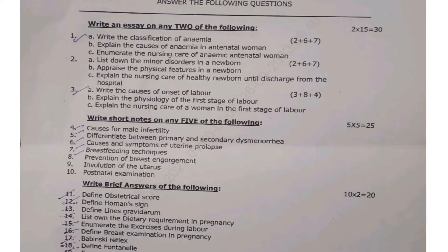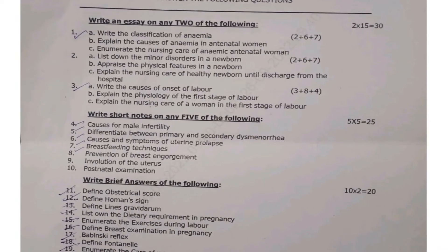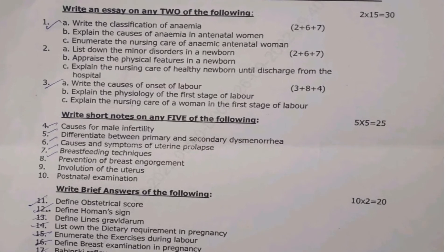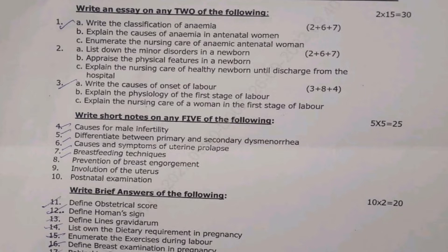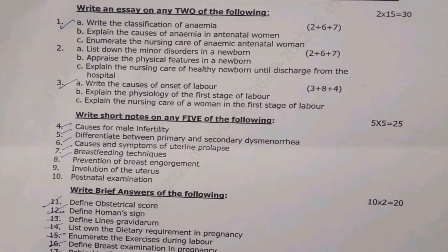First question: 1a — write the classification of anemia; 1b — explain the causes of anemia in antenatal women; 1c — enumerate the nursing care plan of anemic antenatal women.